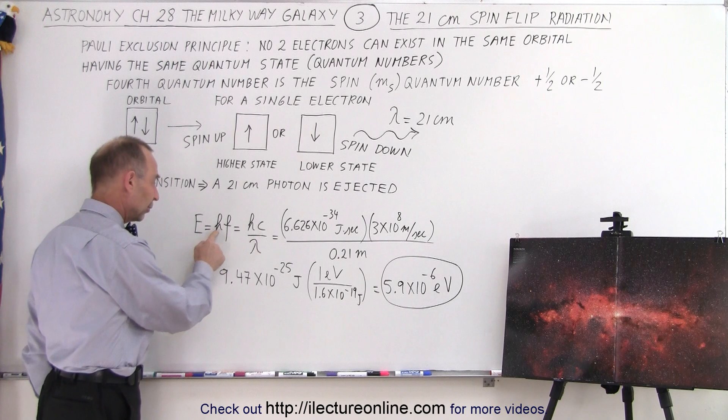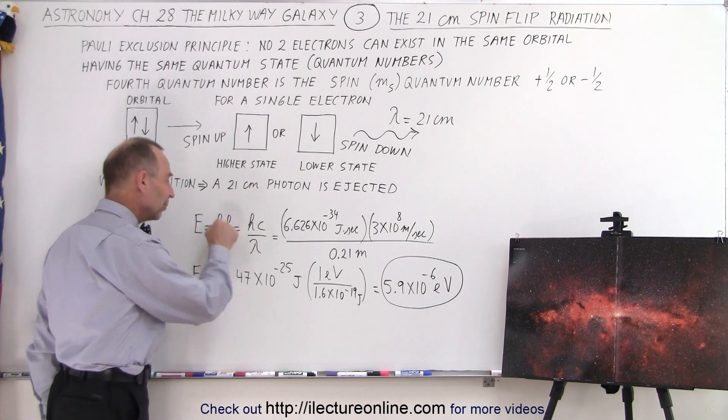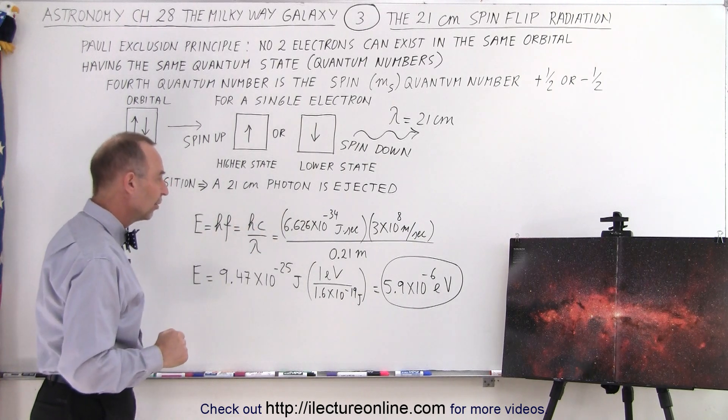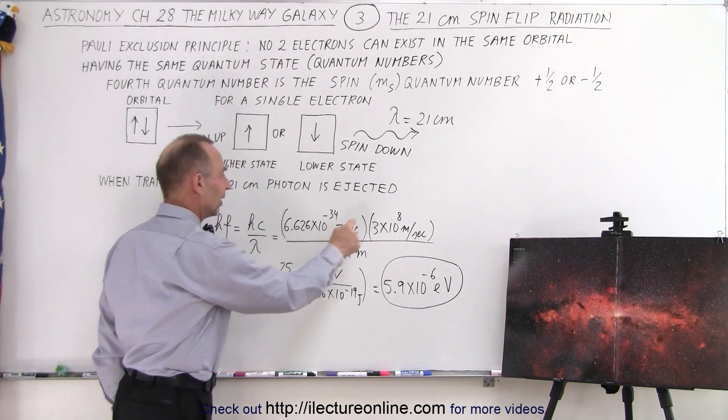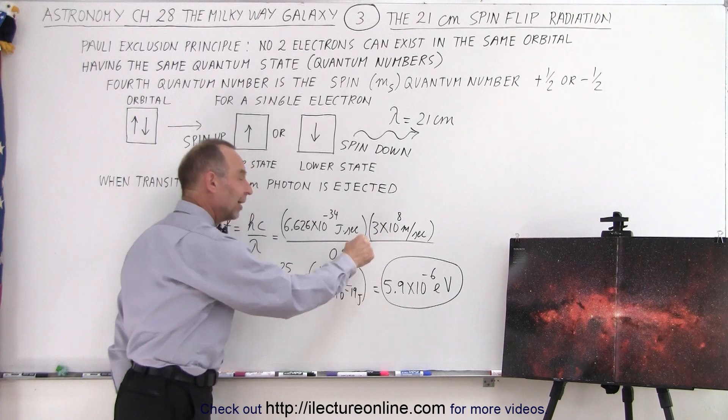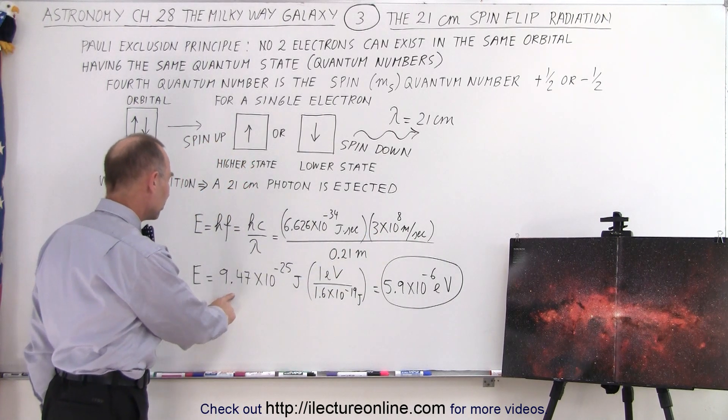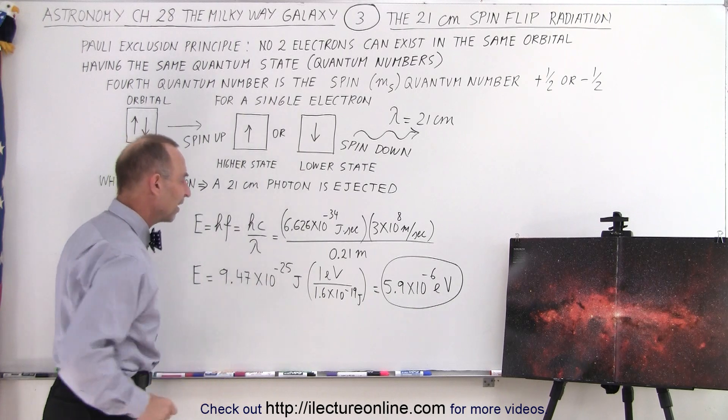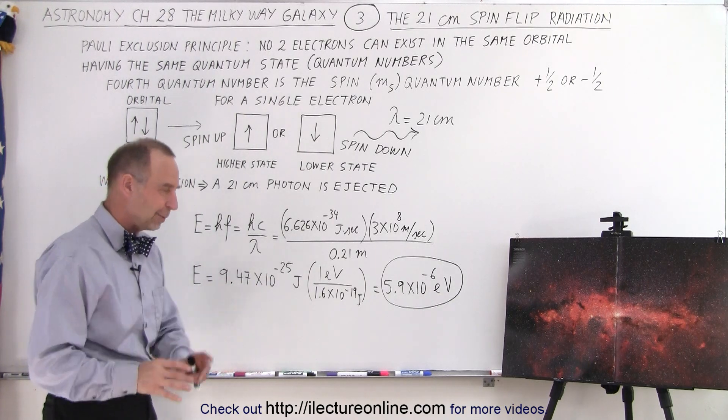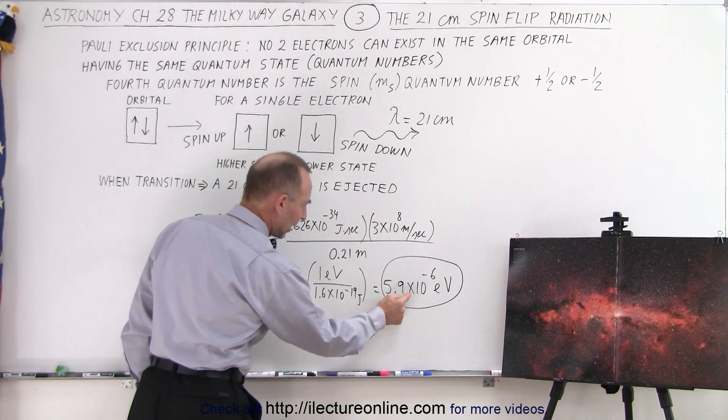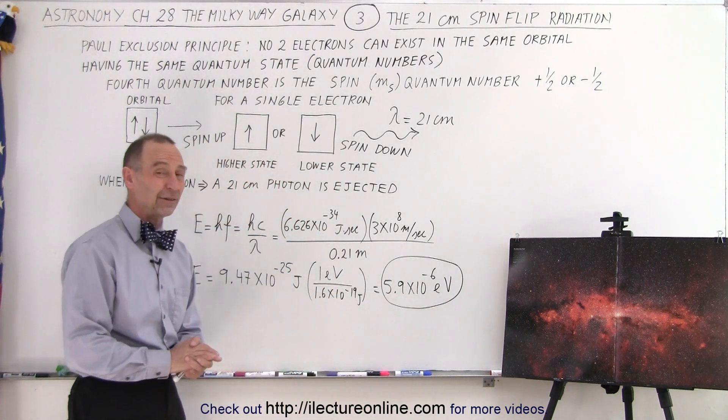That's the energy of the photon equals Planck's constant times the frequency of that photon. And the frequency is equal to the speed of light divided by the wavelength. So we have Planck's constant times the speed of light divided by the wavelength. That's 0.21 meters and now it pops 9.47 times 10 to the minus 25 joules. I always like to convert it to electron volts. So divide by the conversion factor and we get about 6 times 10 to the minus 6 electron volts.